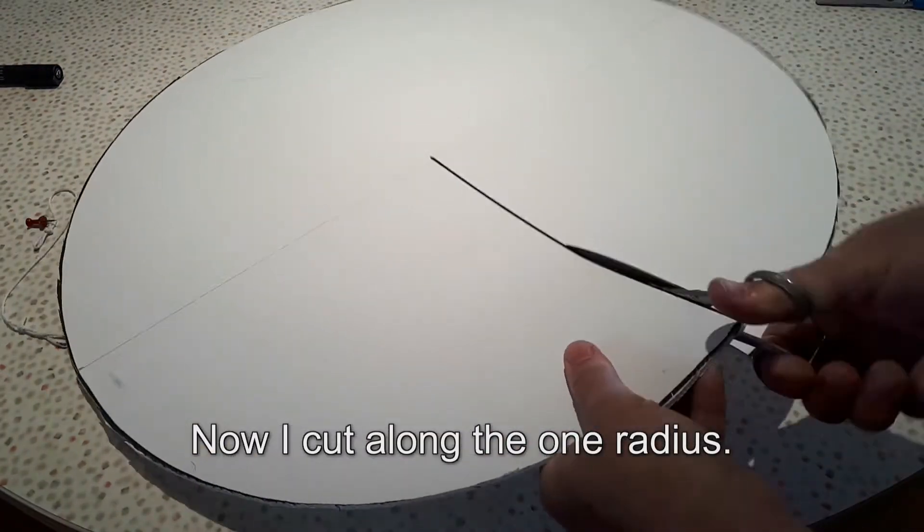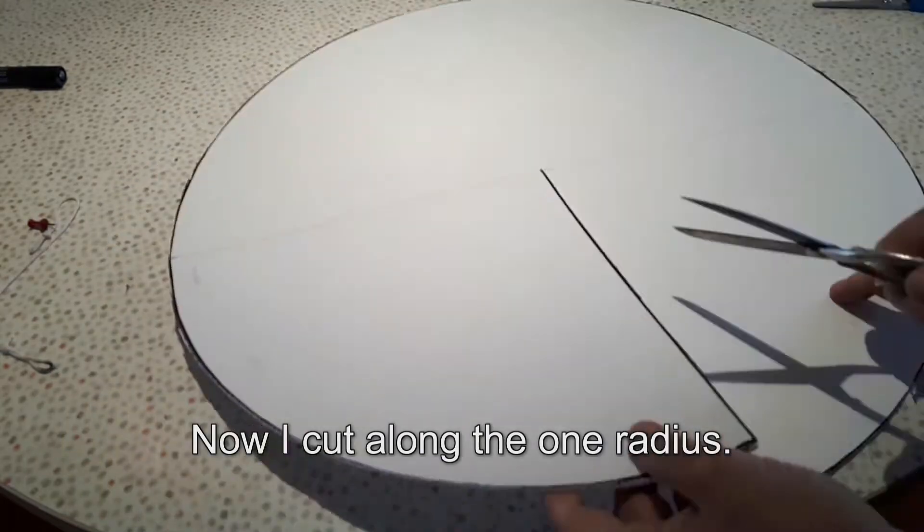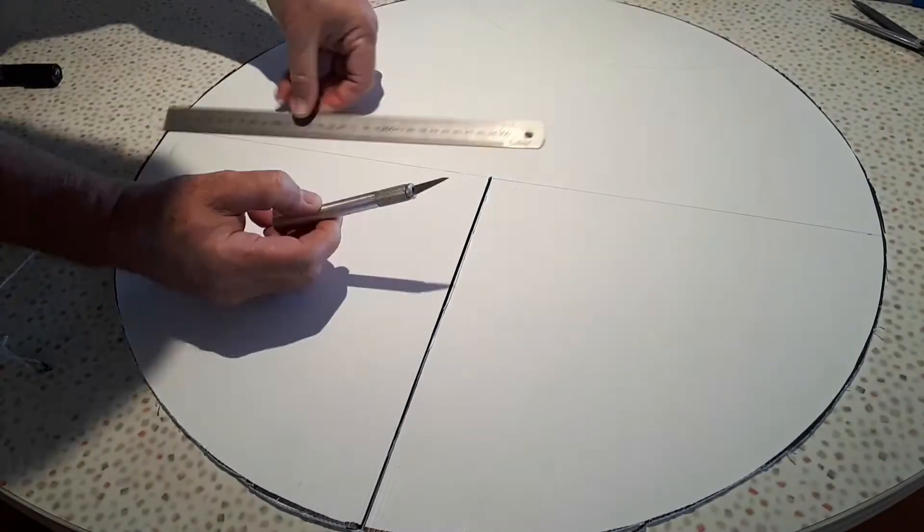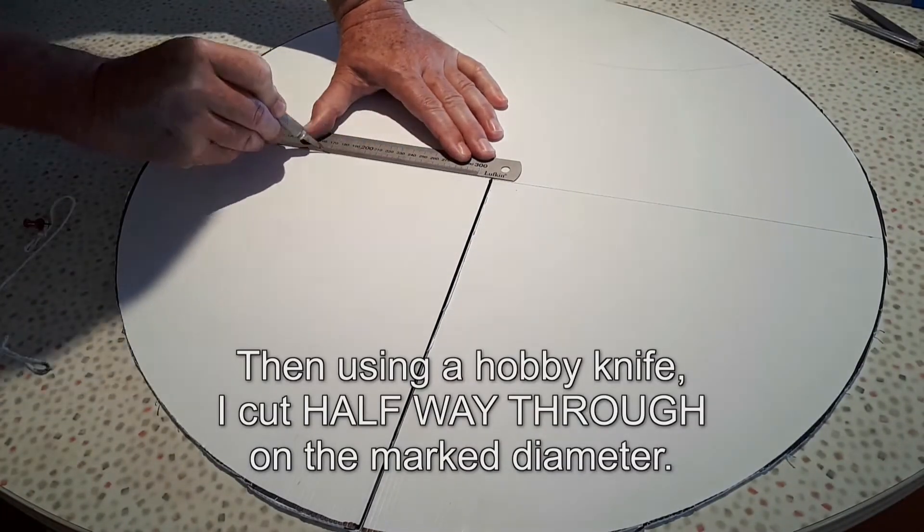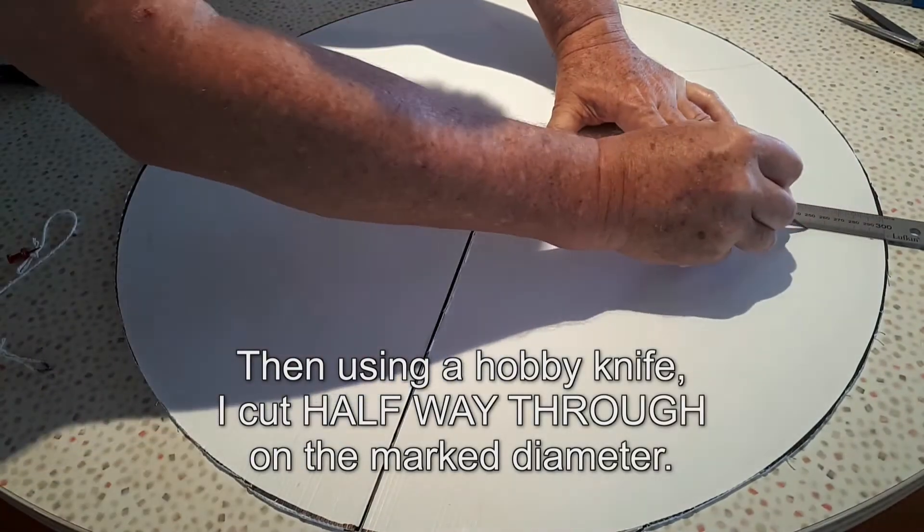Now I cut along that one radius, the one I marked with the permanent marker. Then, using a hobby knife, I cut halfway through on the marked diameter.